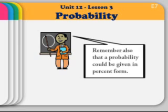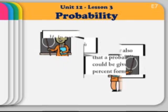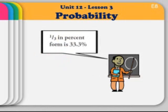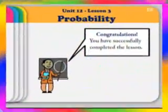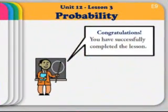Remember also that a probability could be given in its percent form. One third in percent form is 33.3%. Congratulations, you have successfully completed the lesson.